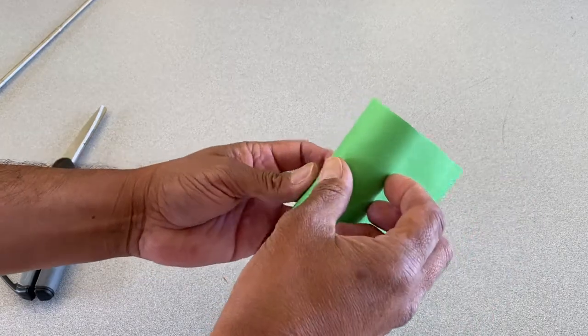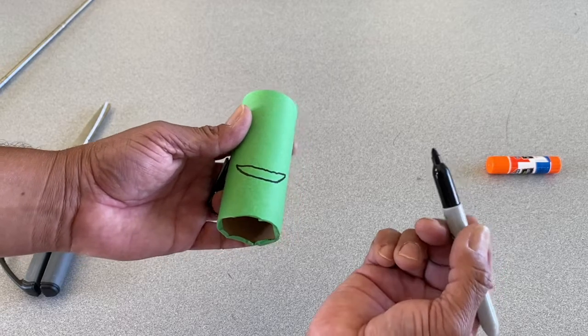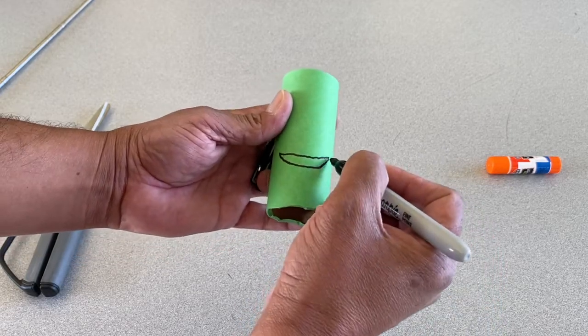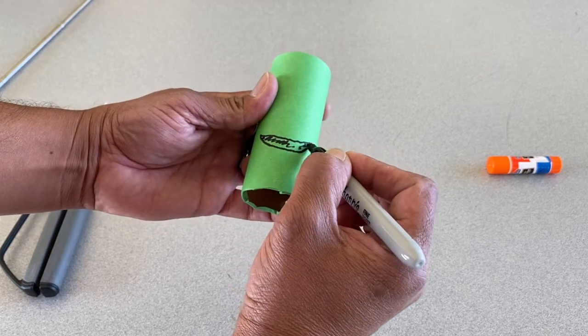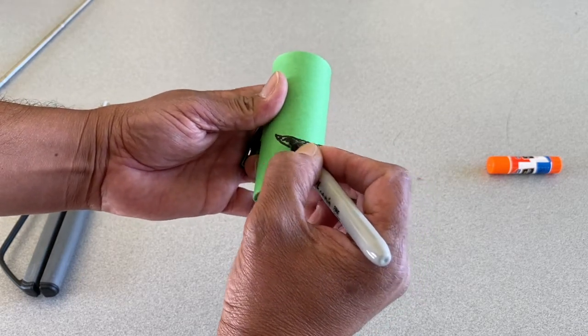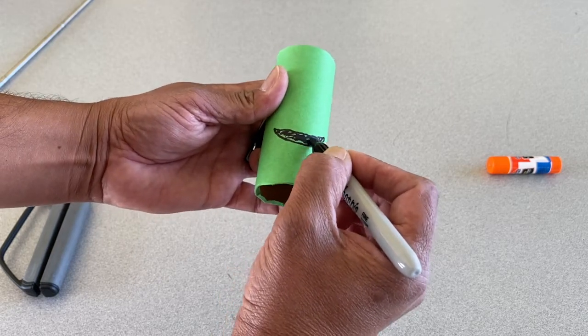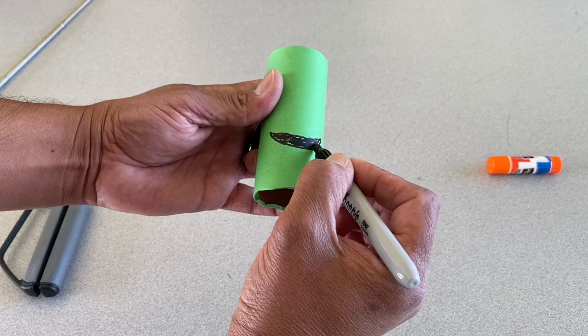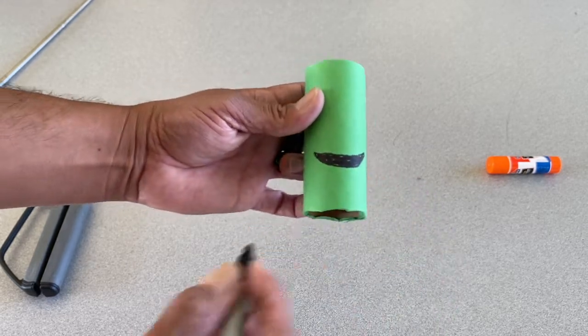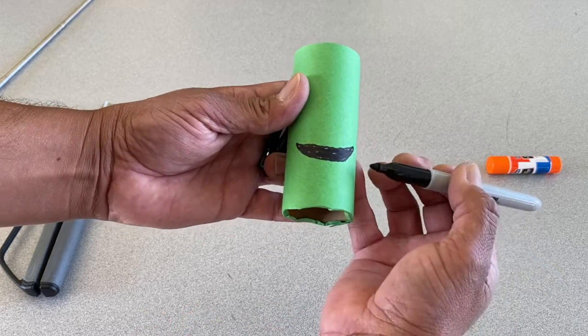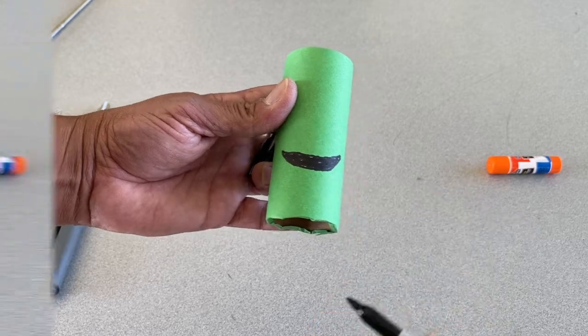Wrap the tube wrap around it. For our next step, using your sharpie marker, draw a happy face and go ahead and color it in. Your happy face should be about a third from the bottom from the top of the tube.